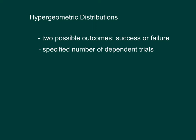So in each situation, each selection reduces the number of items that could be selected in the next trial. So the probabilities in these trials are dependent.